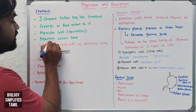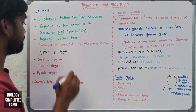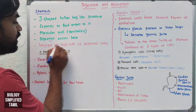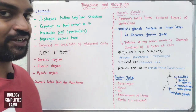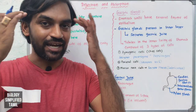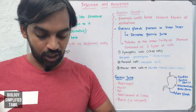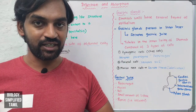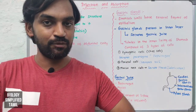Digestion occurs here, because most of the digestion is in the stomach. It is located on the left side of the abdominal cavity. We have a cranial cavity, thoracic cavity, and abdominal cavity. The left side is our stomach.